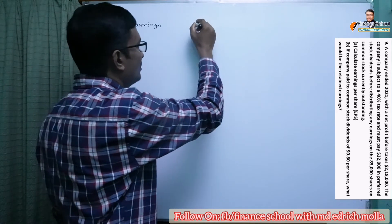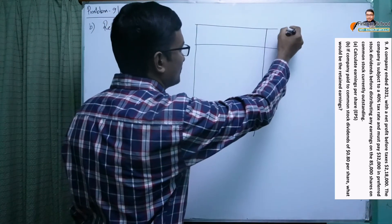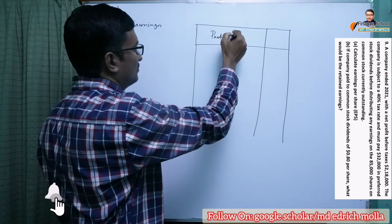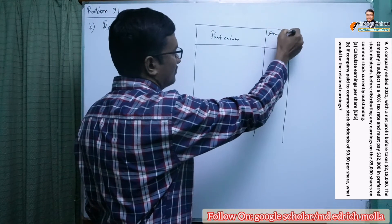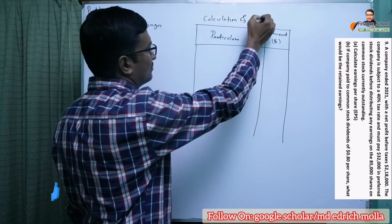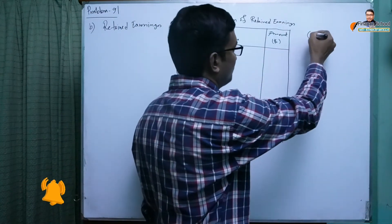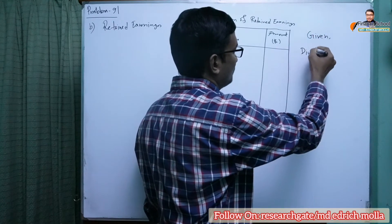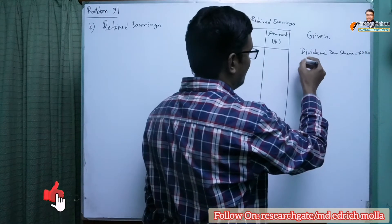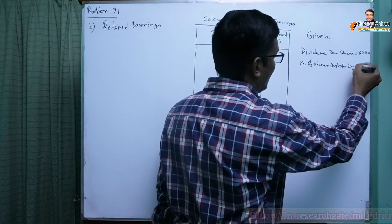For Requirement B we find the retained earnings. We draw a small table for the calculation. The dividend per share is given as $0.8, and the number of shares outstanding is 85,000 shares. We also bring forward from Requirement A the earnings for common stockholders.